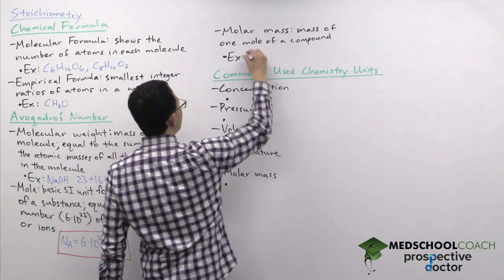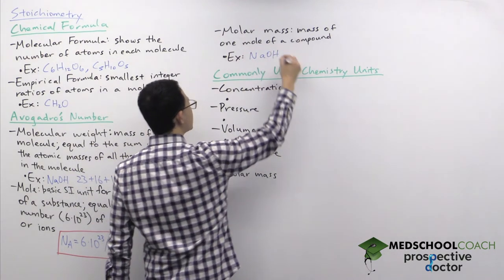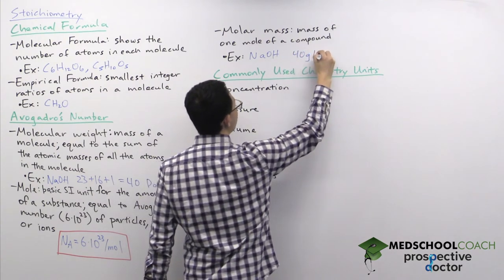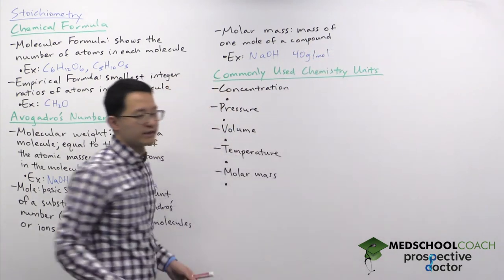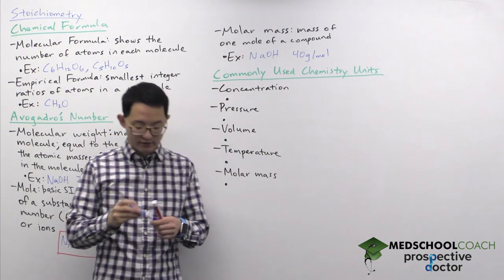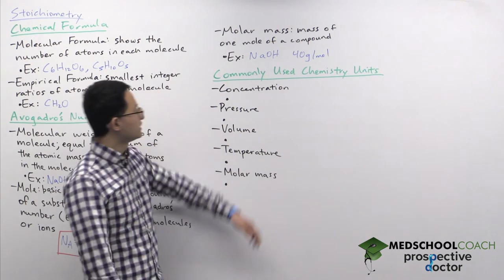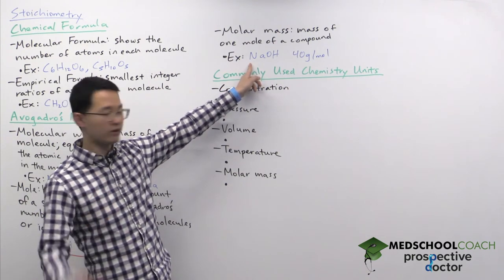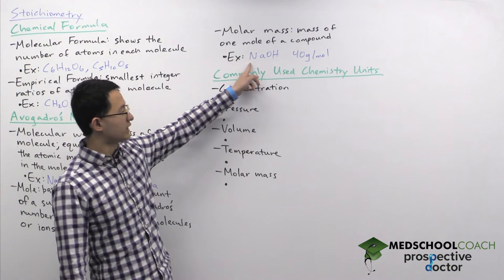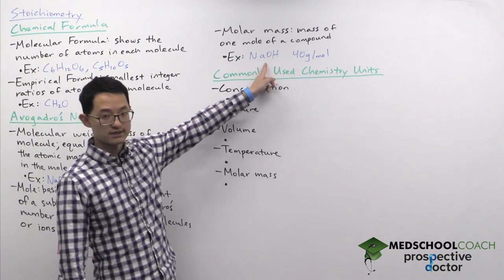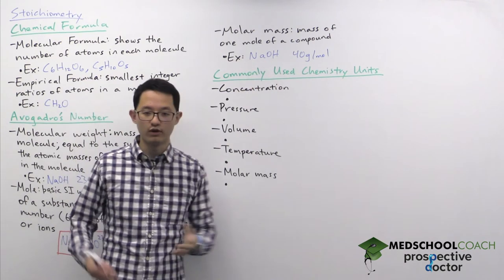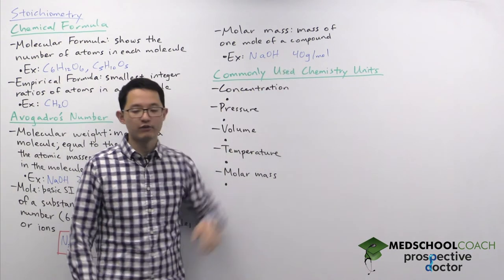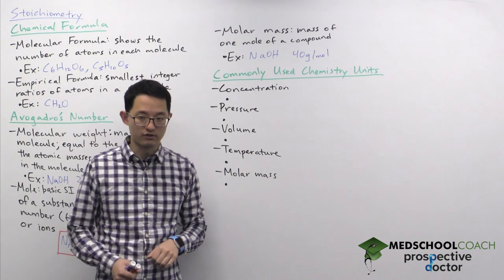So for example, if we wanted the molar mass of sodium hydroxide, it would be equal to 40 grams per mole. And we would calculate it essentially the same way we did with the periodic table. If you look at the periodic table, it tells you 1 mole of sodium has an atomic weight of 23 grams per mole. Oxygen is 16 grams per mole. Hydrogen is 1 gram per mole. You add them up, that will give you a molar mass of 40 grams per mole for sodium hydroxide.